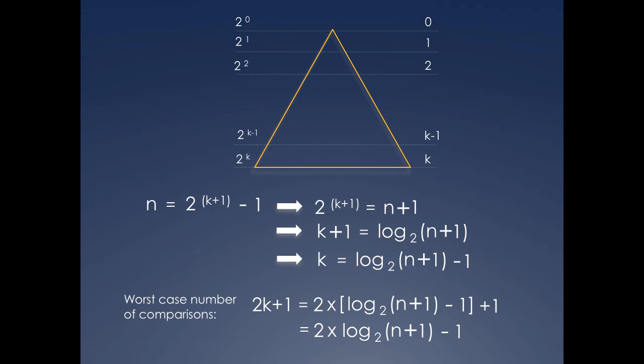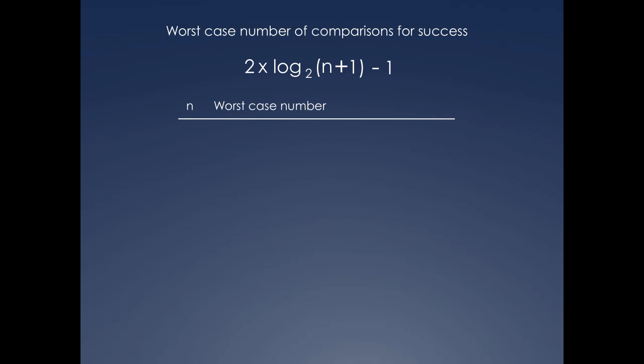We can double check that this expression holds for the values of n we have seen before. For n equals 1, the log of 2 base 2 is 1, and the number of comparisons works out to 1. Similarly, the numbers for n equals 7 and n equals 15 work out to 5 and 7, as expected.